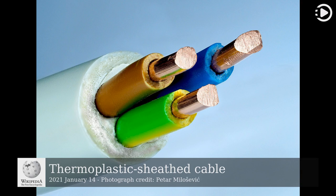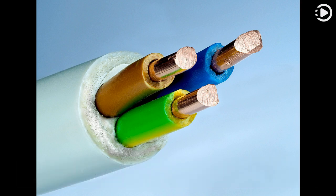A thermoplastic sheathed cable consists of a toughened outer thermoplastic sheath of polyvinyl chloride, covering one or more individual annealed copper conductors.